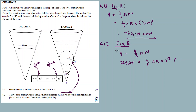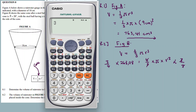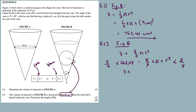We need to solve for r. Multiply both sides by the multiplicative inverse, which is three over four. This cancels the four-thirds on the right side. So we get: 3 times 268.08 divided by 4 equals pi times r cubed.